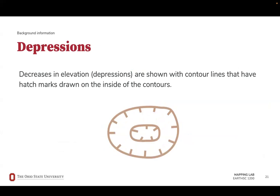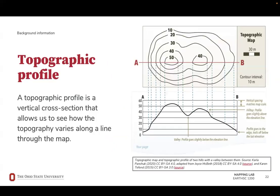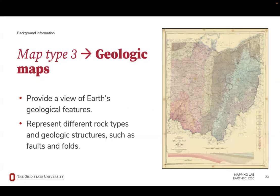Decreases in elevation or depressions are shown with contour lines that have hatch marks or hash marks drawn inside of the contours. Depressions and hills will always form closed loops, but if it's a depression, you'll see these hash marks facing the inside of the circles. A topographic profile is the vertical cross section that allows us to see how the topography varies along a line through the map. These are particularly useful when constructing geologic maps and looking into geologic cross sections.